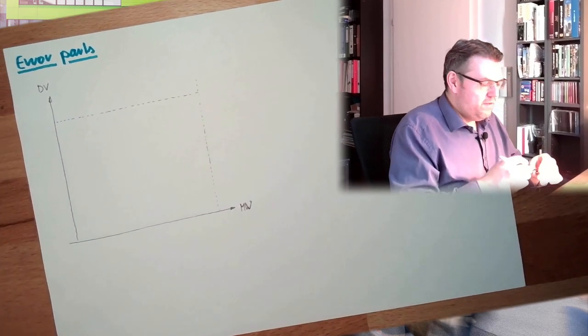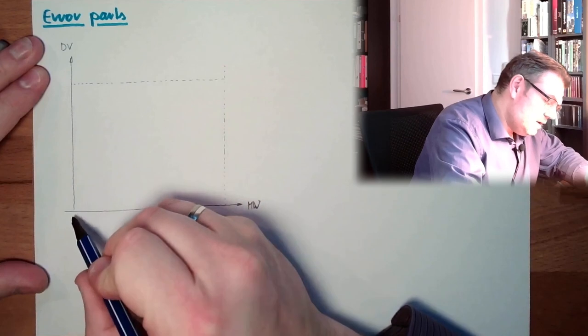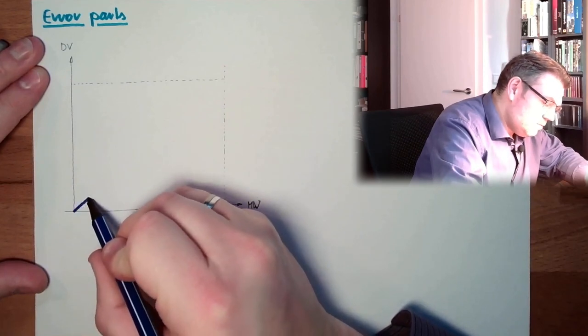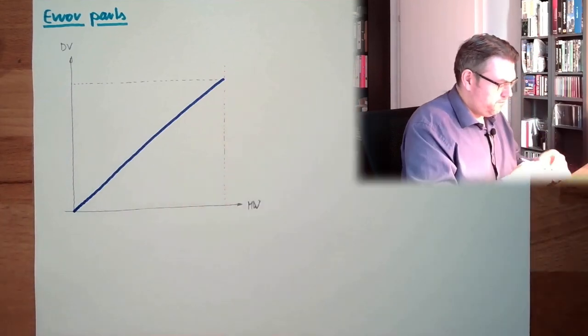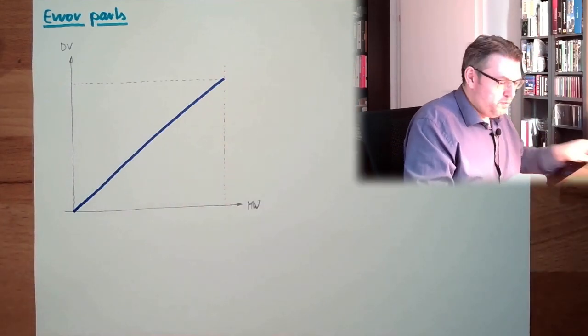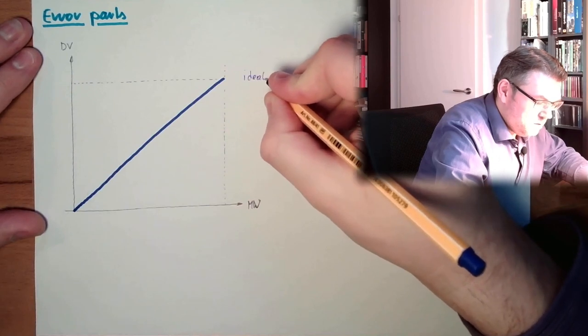So this is the real value and this is the displayed value. We said ideal would be a characteristic like this, linear from point to point. This would be ideal characteristic.